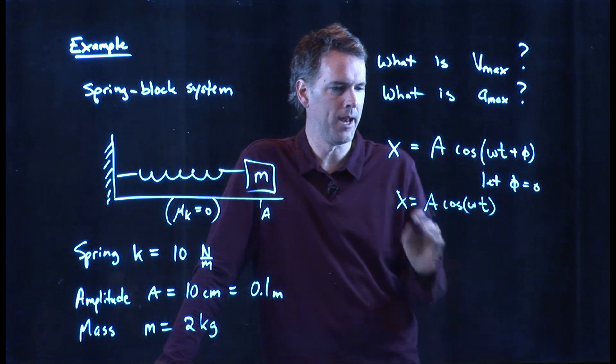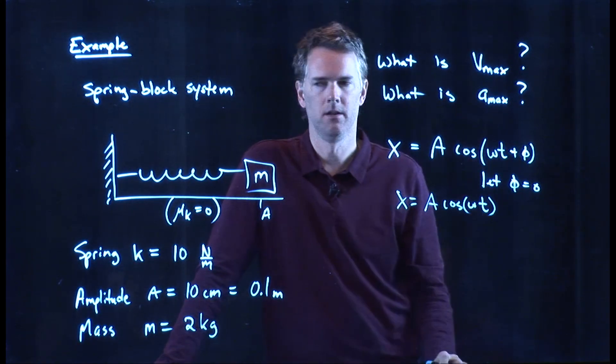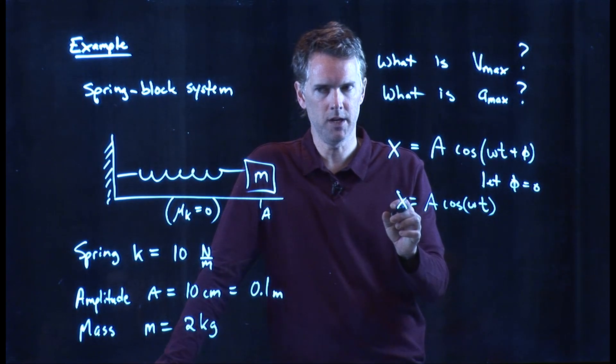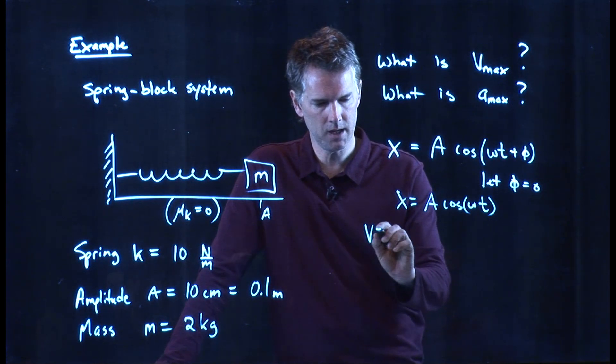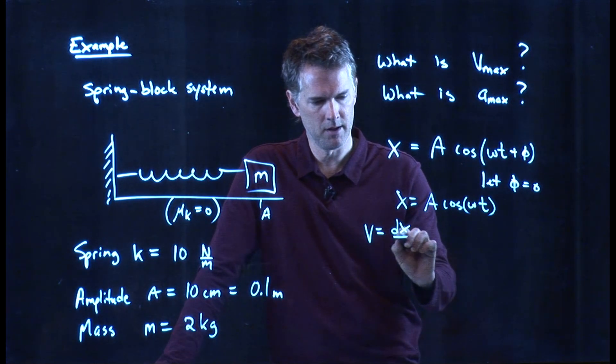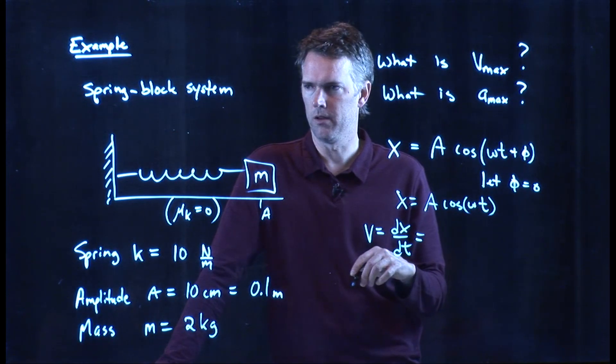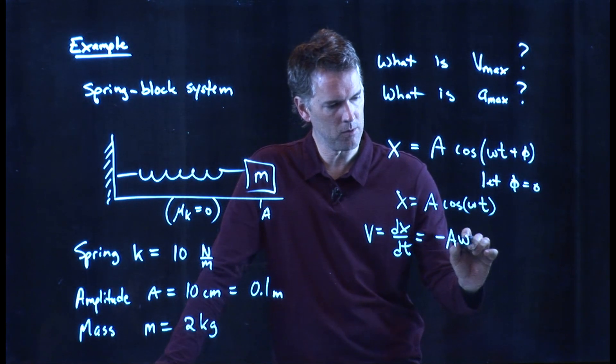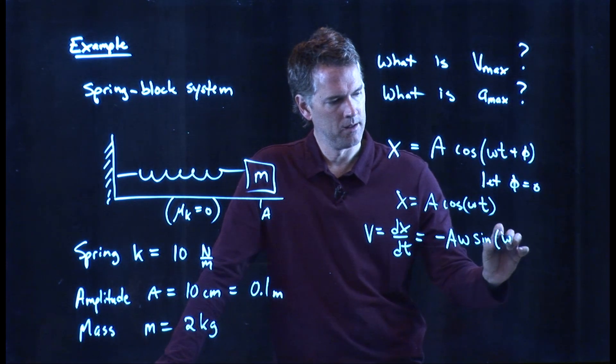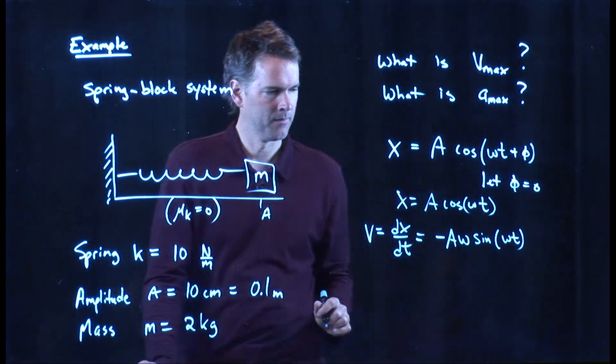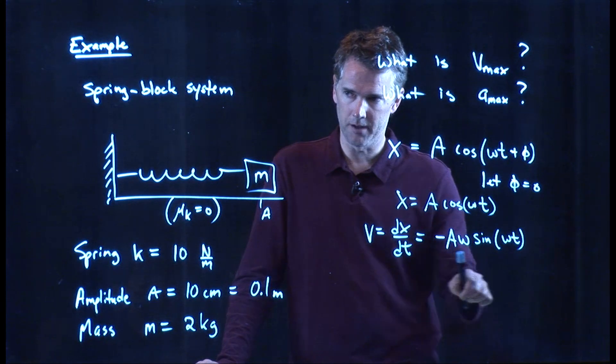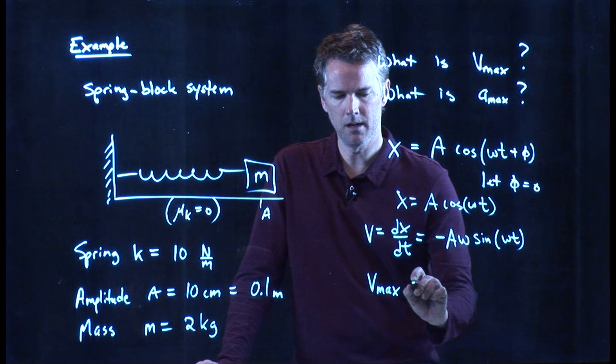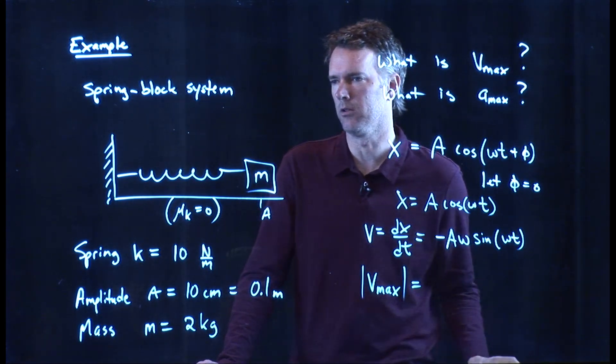But we don't want x. We want v. We need to figure out what v max is. So, we know that v is related to x. Because v is just the derivative of x. And we saw what that was. V being the derivative of x means that we get negative A omega sine of omega t. So, if this is the velocity, what is the biggest speed that you can have? And let's just worry about the absolute magnitude of it.